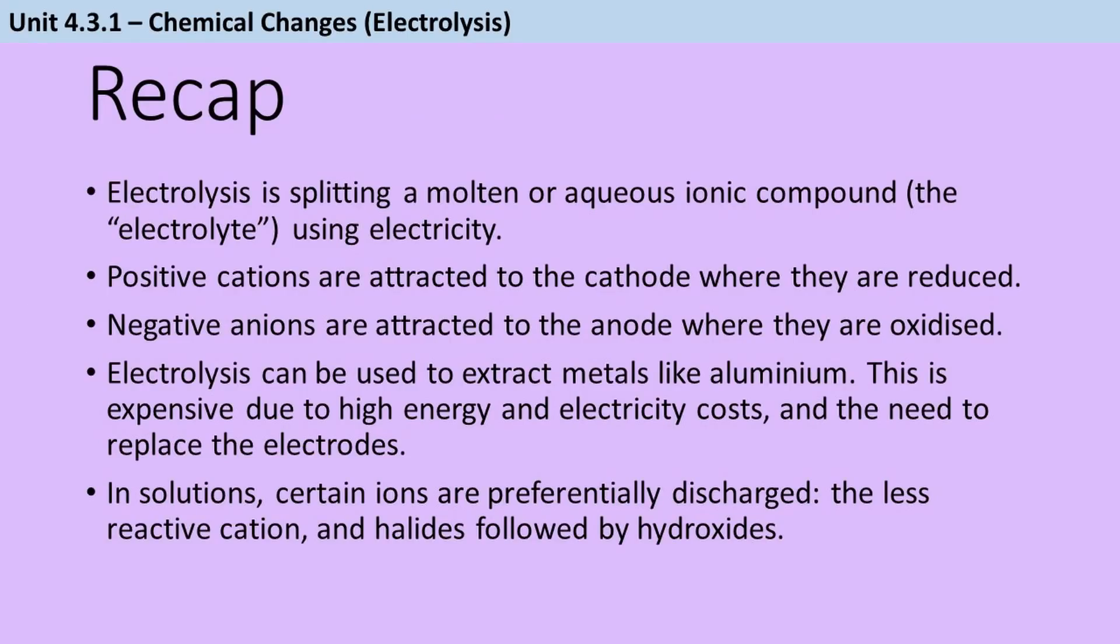So to summarise all that, electrolysis is splitting a molten or aqueous ionic compound called the electrolyte using electricity. Positive cations are attracted to the cathode where they are reduced, negative anions are attracted to the anode where they are oxidised. Electrolysis can be used to extract metals like aluminium. This is expensive due to high energy and electricity costs and the need to replace the electrodes. In solutions, certain ions are preferentially discharged, the less reactive cation and halides, followed by hydroxides.